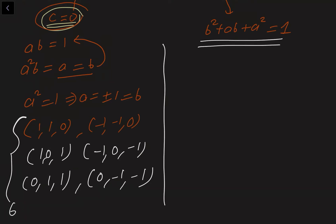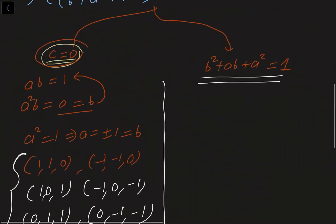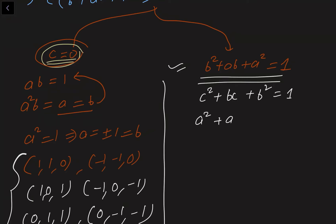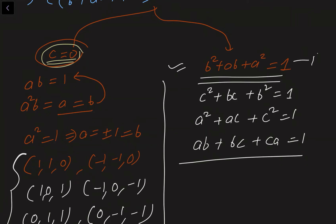Now let's come to Case 2. When I used the first two equations, I got B² + AB + A² = 1. Since the equations are symmetrical with respect to A, B, C, using the other pairs of equations similarly gives C² + BC + B² = 1 and A² + AC + C² = 1. Let's call these equations 2, 3, and 4 respectively.